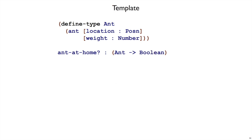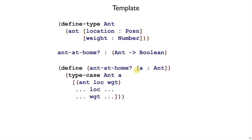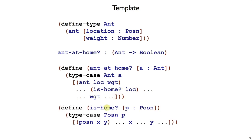Next step: template. In this case it says we've got ant-at-home that takes an ant A, and so we do a type case on ant A, where we have a location and a weight to work with. This is what our previous templates looked like, but the template is not complete yet. We know that weight is a number, but that location is a posin — a type that we defined ourselves. That means we know there are x and y pieces, but better yet, we know it's a posin, and so we want a helper function that deals with posins the same way we have a function that deals with ants. That is-home function is going to take a posin and do something with it, and we can write the whole template for that is-home function as well.